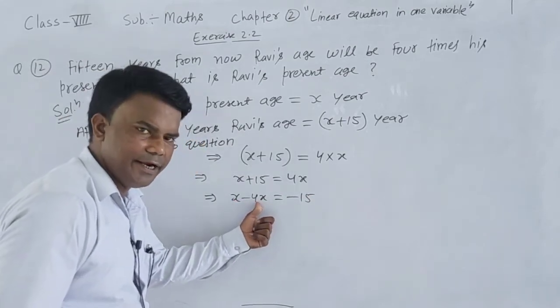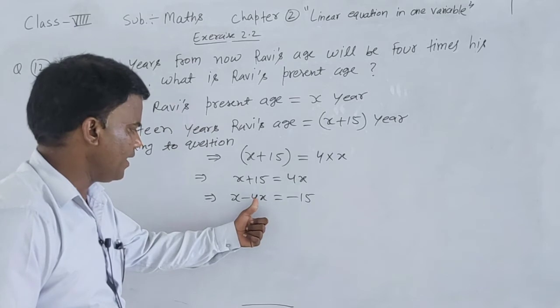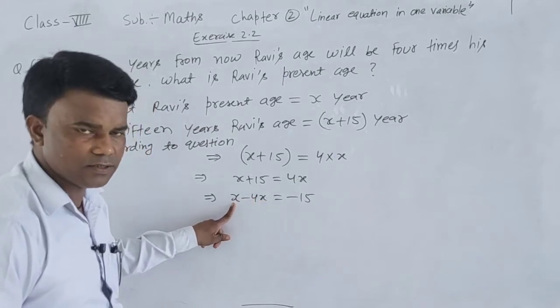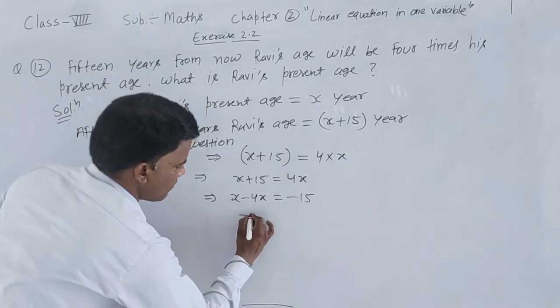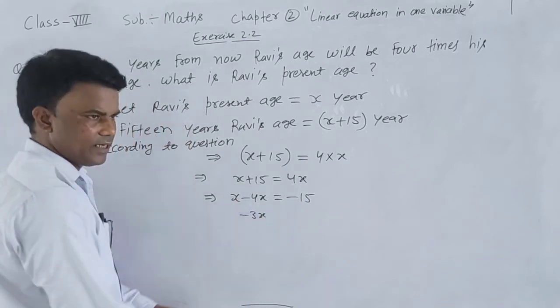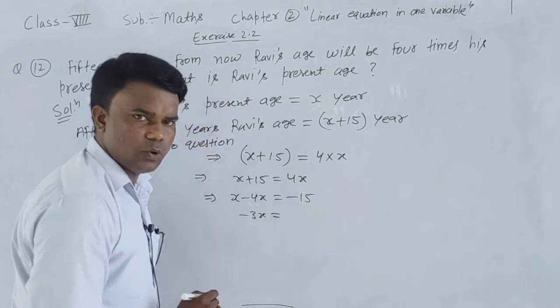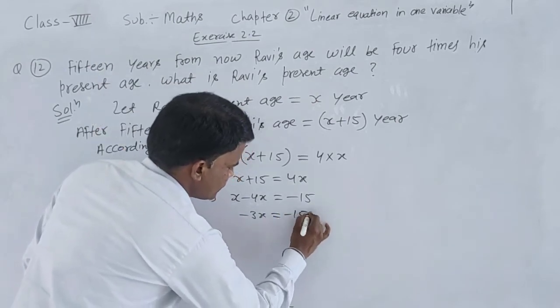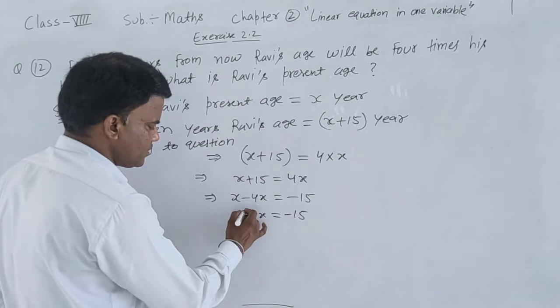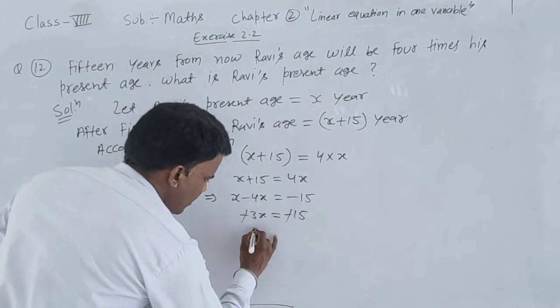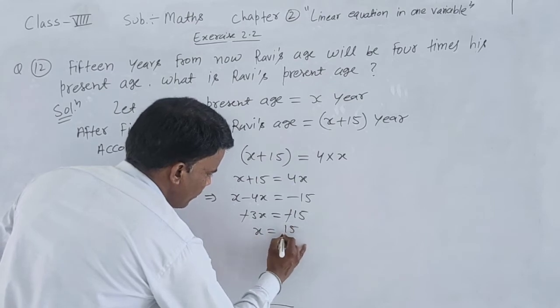Transfer the x terms: x minus 4x, and 15 transfers to the other side. We get negative 3x equals negative 15. So x equals 5.